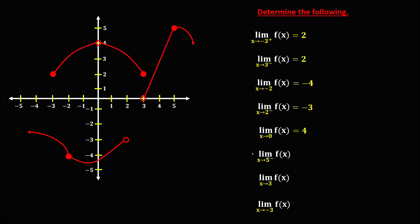Then for this limit, the limit of f of x as x approaches positive 5 from the left. This is x equals positive 5 and this is the coordinate. Since we are approaching from the left, the limit is equal to positive 5.